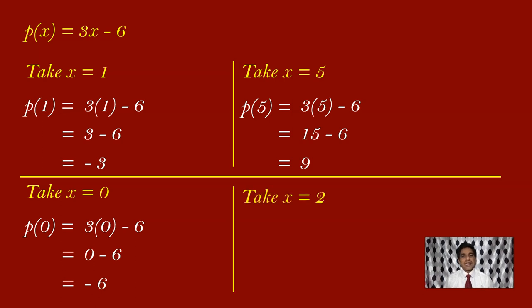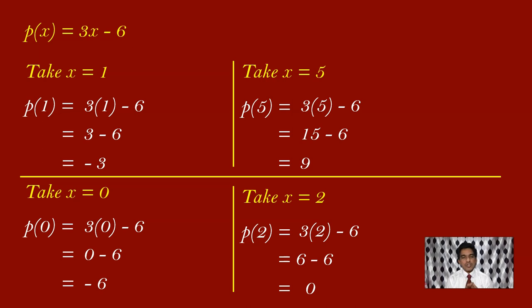Let us take one more. I'll take x is equal to 2. So let us find p of 2. p of 2 is 3 of 2 minus 6. 3 twos are 6, minus 6, equal to 0. So we can see that as we change the value of x each time, the polynomial value also changes.